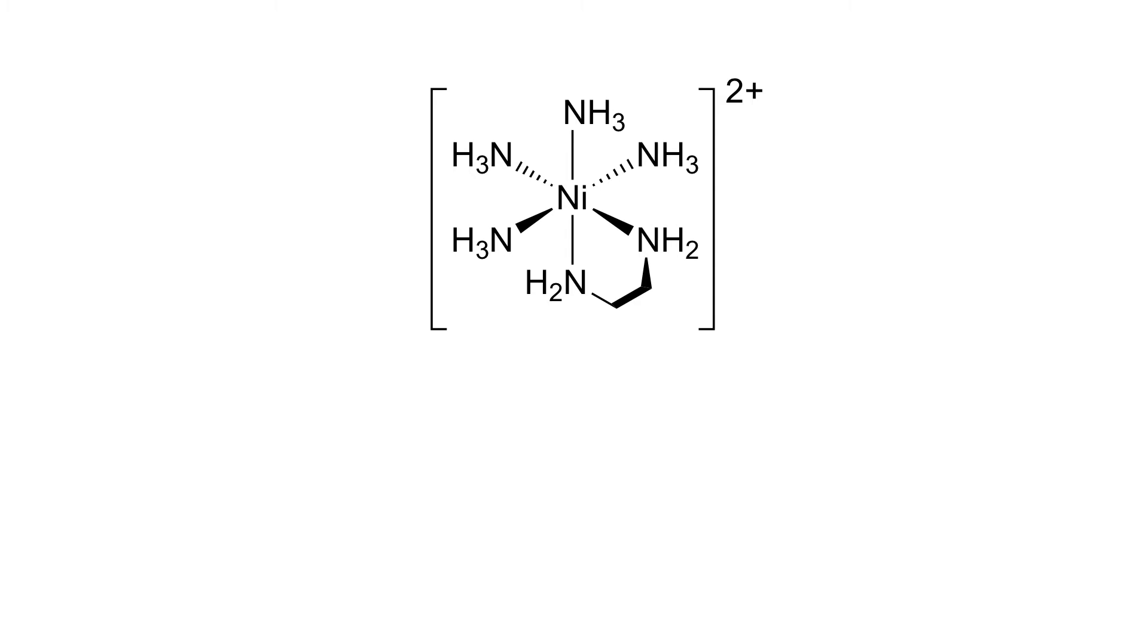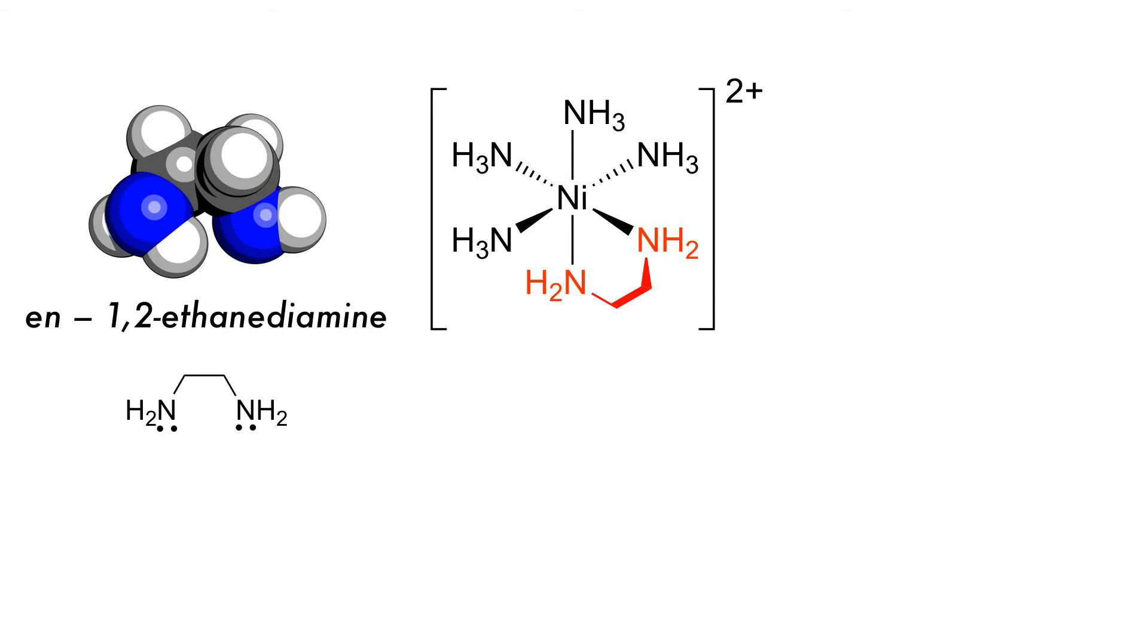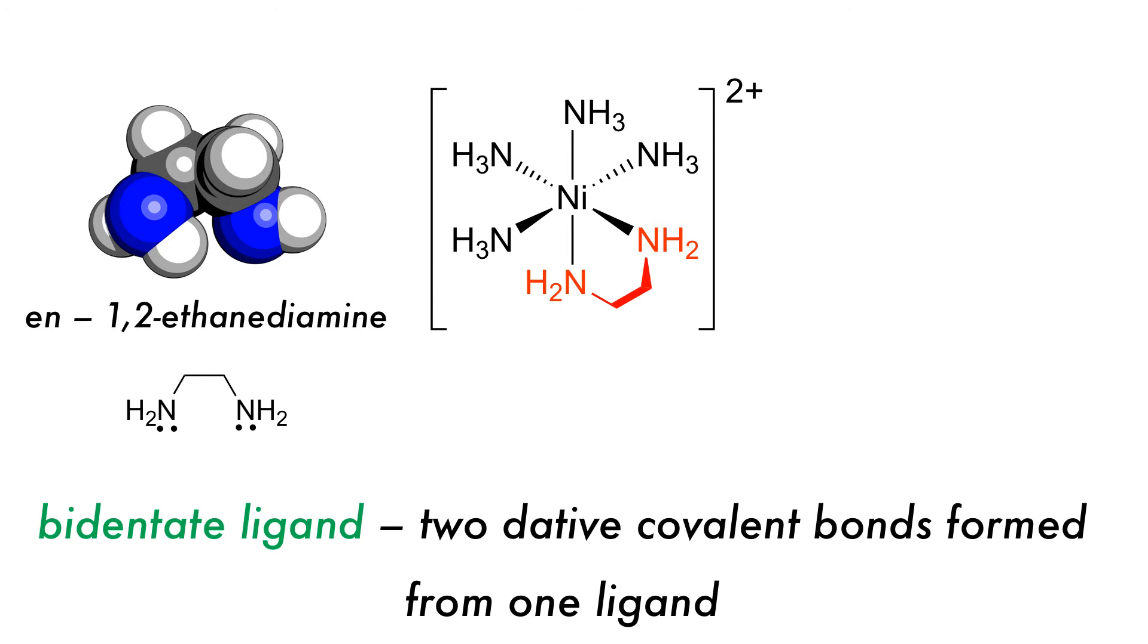Ligands do not always need to form only one bond with the central ion. If they form two, as in the case of the ene ligand, then we term this as bidentate, or two bites, as they have two dative covalent bonds with the central species.